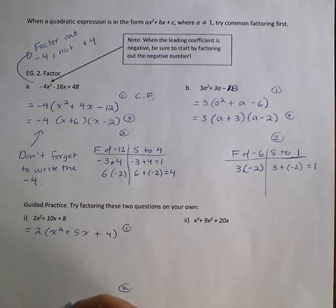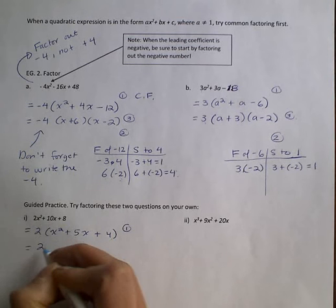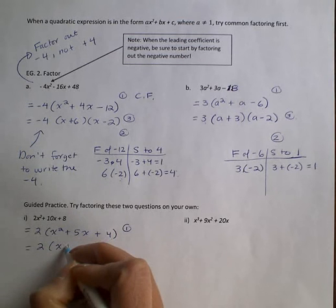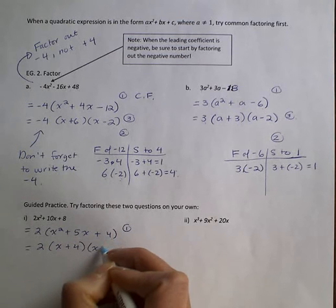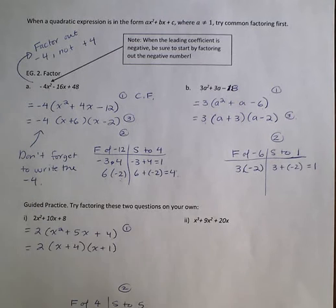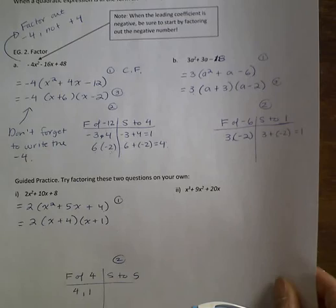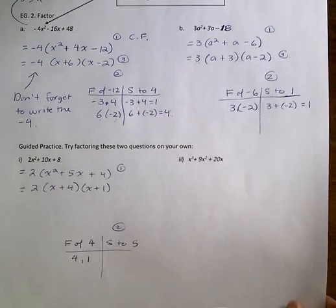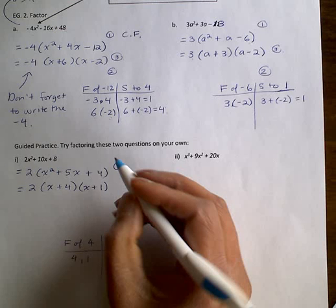Your second step is to factor the trinomial further. So here in your factor sum chart, you are looking for factors of 4 that sum to 5. The numbers that work are 4 and 1. So we write down our final factor form, which would be x plus 4 times x plus 1. Sorry I made the chart and I didn't realize you couldn't see it. There's the chart. And that's your third step.